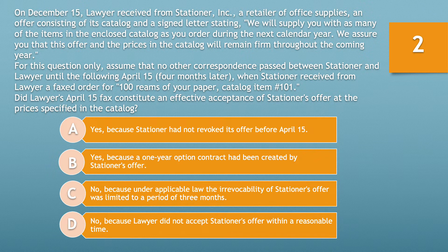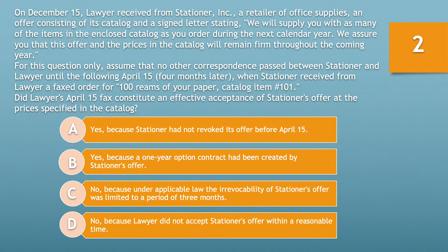Question number 2. On December 15th, a lawyer received from Stationer Inc., a retailer of office supplies, an offer consisting of its catalog and a signed letter stating: 'We will supply you with as many of the items in the enclosed catalog as you order during the next calendar year. We assure you that the offer and the prices of the catalog will remain firm throughout the coming year.' For this question only, assume that no other correspondence passed between Stationer and lawyer until the following April 15th, four months later, when Stationer received from lawyer a faxed order of 100 reams of paper, catalog item number 101. Did lawyer's April 15th fax constitute an effective acceptance of Stationer's offer at the prices specified in the catalog?